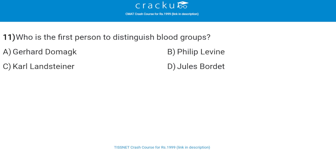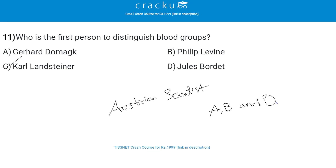Who is the first person to distinguish blood groups? The correct answer is Karl Landsteiner, that is option C. Karl Landsteiner, an Austrian scientist, discovered the three human blood groups — A, B, and O. For this discovery, he was awarded the Nobel Prize for medicine in the year 1930.